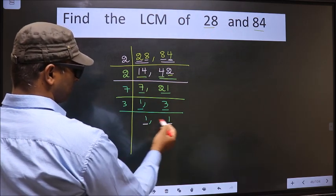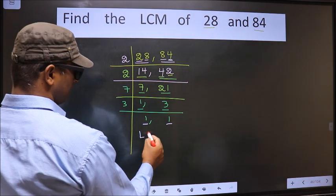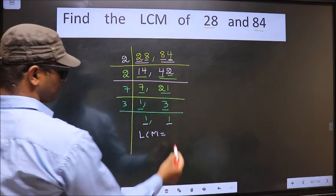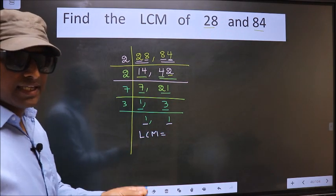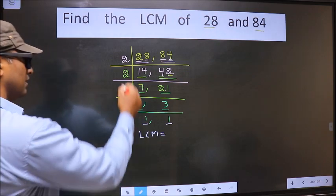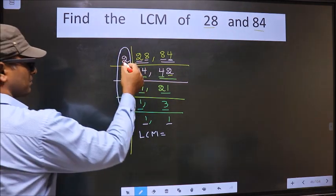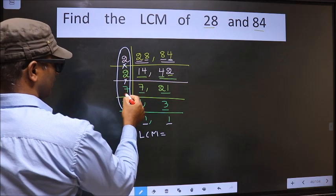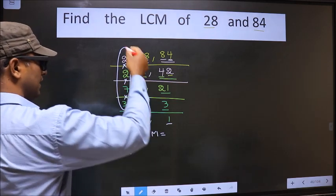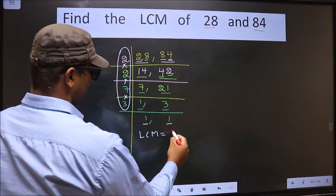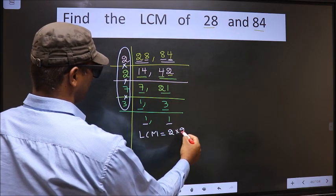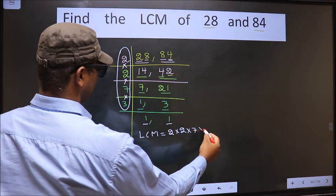Now we got 1 in both the places. So our LCM is the product of these numbers. Okay. Product of these numbers. That is 2 into 2 into 7 into 3.